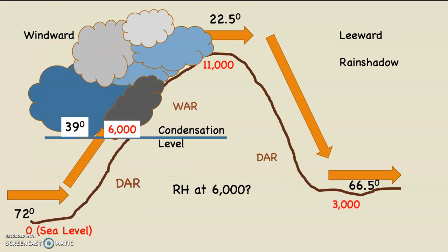Again, here's our problem. What is the relative humidity at 6,000 feet, the condensation level, on the windward side? The question you ask yourself is: do we see clouds or not? And the answer is yes, we see clouds. The condensation level is the elevation where the clouds begin, and 6,000 feet in this problem is the condensation level. Therefore, at 6,000 feet there are clouds. And if there are clouds at 6,000 feet, the relative humidity must be 100%, and that's the answer.